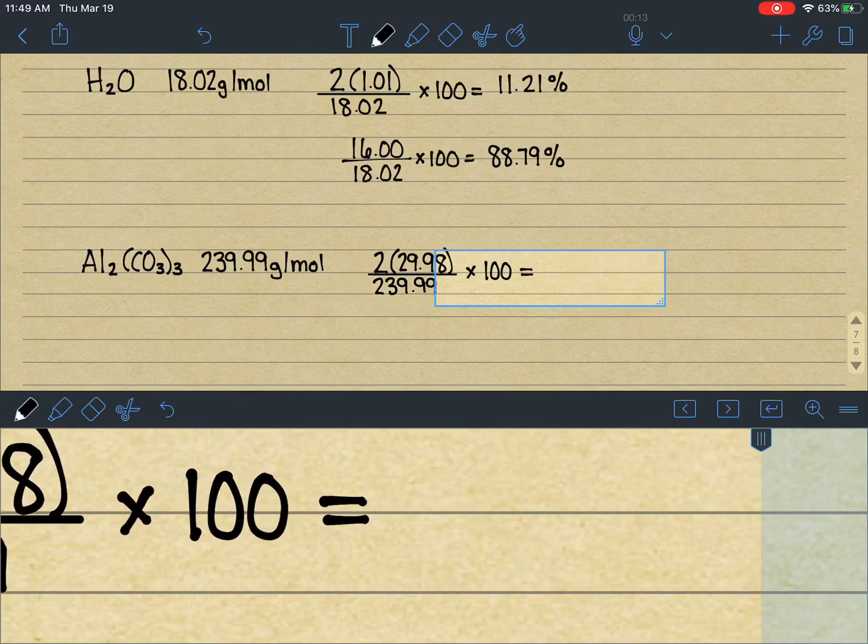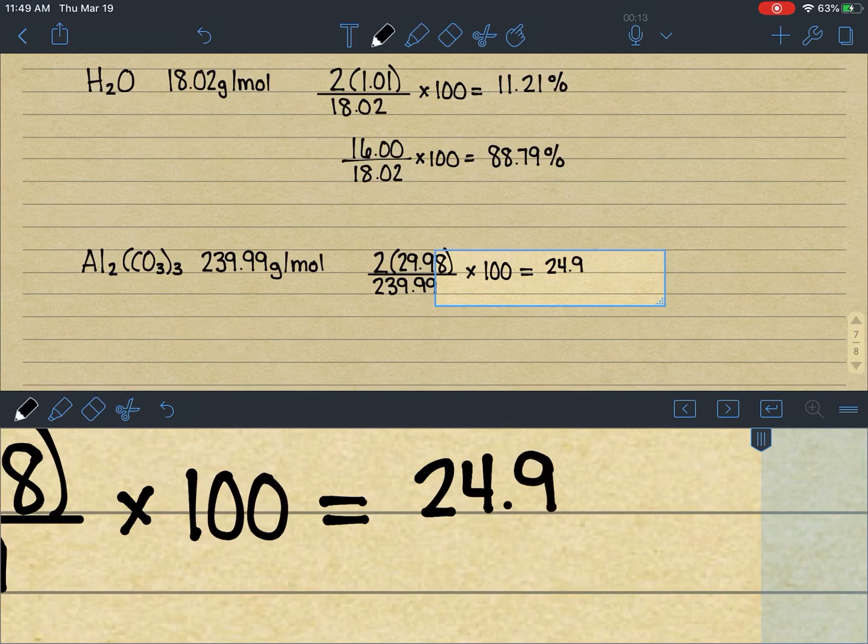Again, rounding that answer out to the hundredths place, I'm going to round that to 24.98%. So 24.98% of this compound is aluminum.